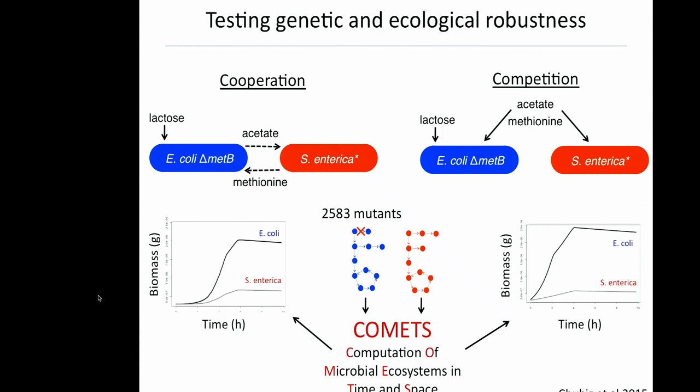We then went in and created all possible single-reaction knockouts. In essence, we created a library of 2,583 mutants, then re-ran simulations for each of these, asking how does growth change as a result of each of these mutations?